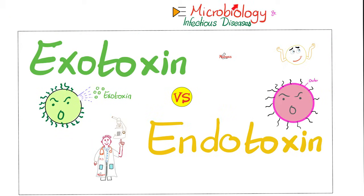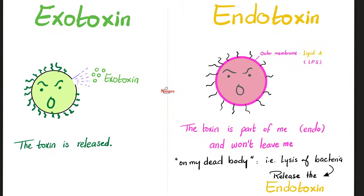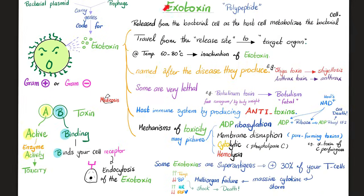In a previous video we talked about the difference between an exotoxin and an endotoxin. To review: an exotoxin is a toxin released from the bacterial cell, versus endotoxin, which is part of the outer membrane of the bacteria. Corynebacterium diphtheriae has an exotoxin released from the bacterial cell as the bacteria invades your cell. This toxin is a protein, coded for by a gene, and this gene is introduced into the diphtheria via prophage, known as beta phage or betaprophage.